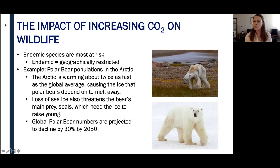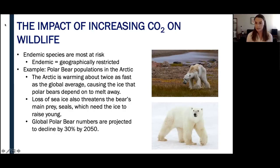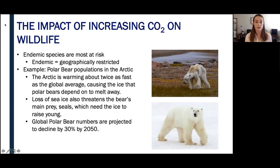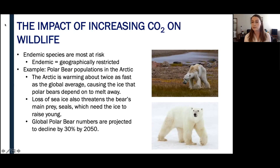You might be wondering why the Arctic is warming at this quicker rate — it's due to a positive feedback loop. As temperatures rise, more ice melts, more heat is absorbed into the earth's surface, less heat is reflected back, leading to more melting, which leads to more heat being absorbed, which leads to more melting. This is the positive feedback loop feeding that accelerated warming we are seeing in the Arctic. Global polar bear numbers are projected to decline 30% by 2050 due to this lack of food and lack of ice.